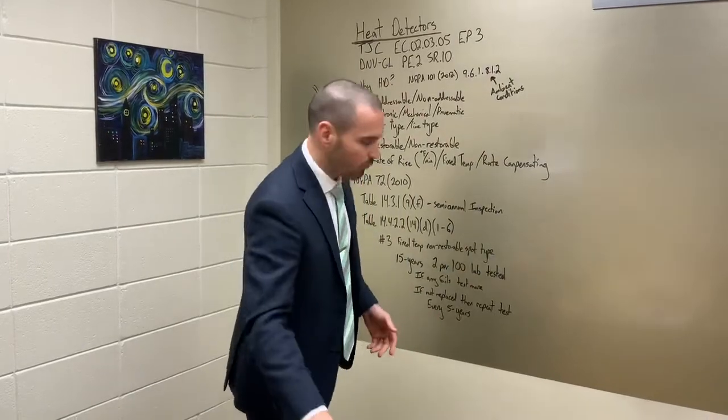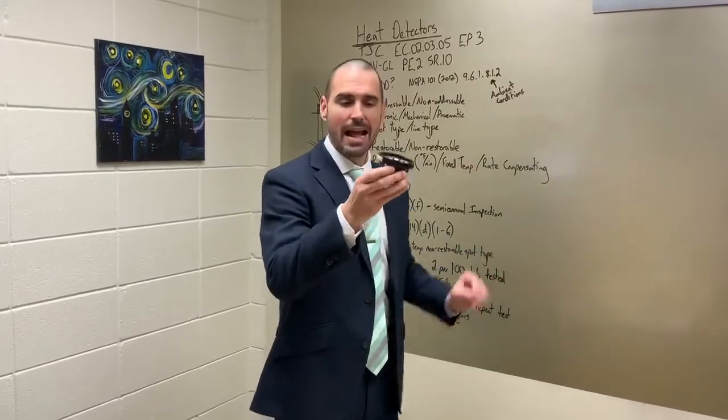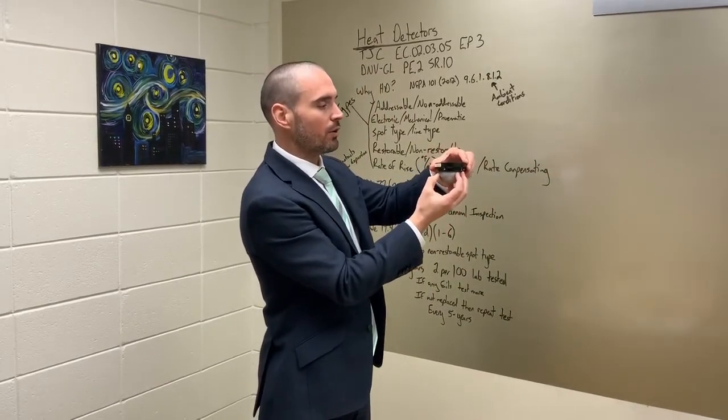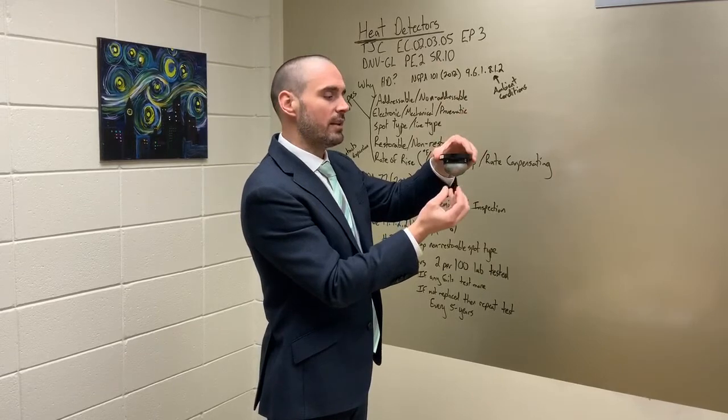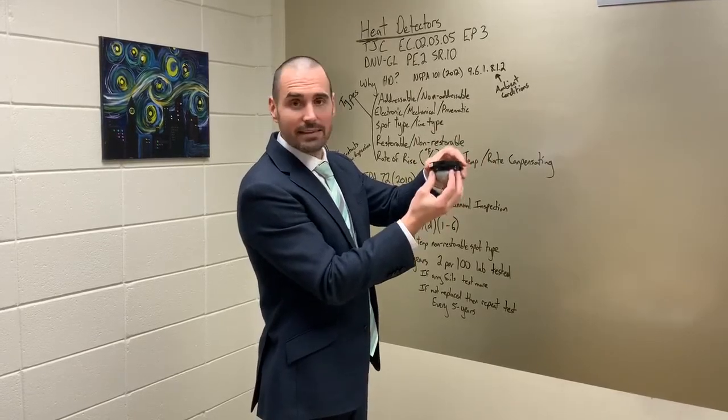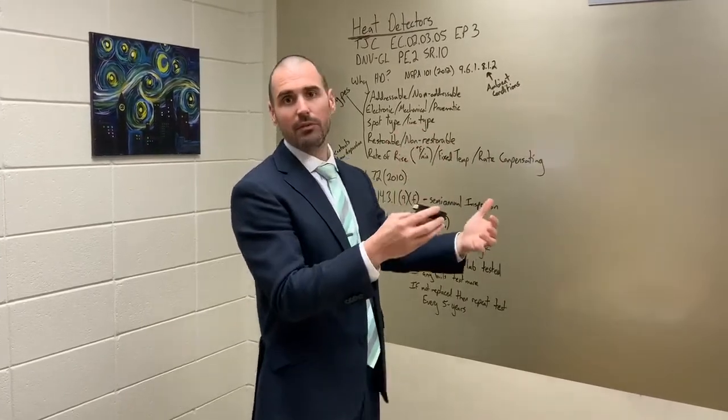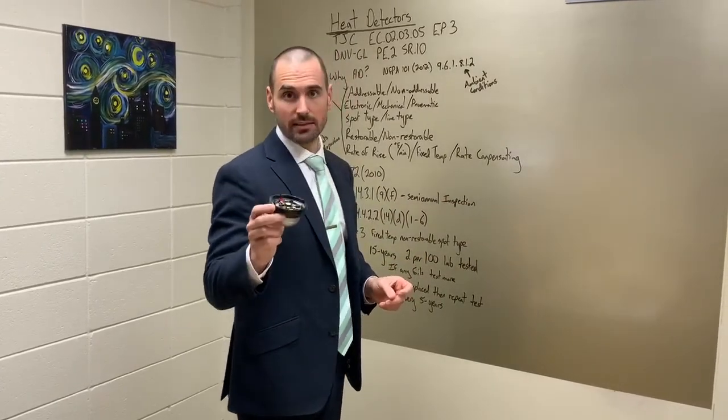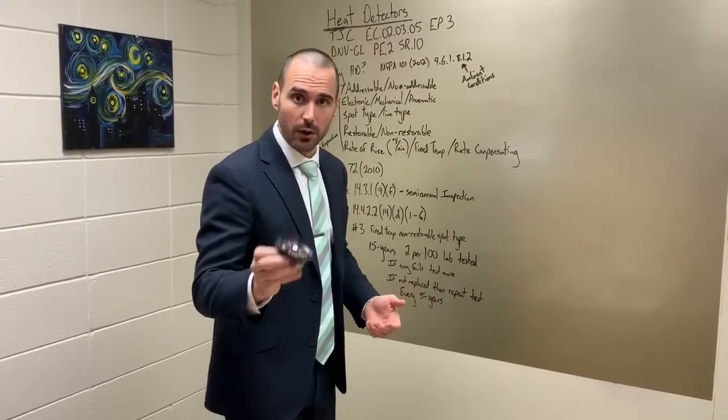Where we see problems are with our non-restorable spot type detectors. This is actually both. This is a rate of rise restorable and a fixed temp non-restorable. So the rate of rise in this is pressure builds up inside of this air chamber and it vents out of the top. When pressure builds up faster than it can vent out, it triggers an alarm. It also has a fixed temperature. When it hits a certain temperature, then it triggers the alarm as well. But that is a thermal link. There's a spring inside of here, it melts it and that spring releases and activates. So that one can't be replaced. You gotta throw it away. What's most common is that these aren't tested. If you check your reports and you have these, a lot of times it will say unable to test non-restorable device. That is false. It's absolutely false.